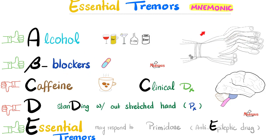Beta blockers inhibit the sympathetic nervous system, so you become less nervous, which means fewer tremors. Caffeine, on the other hand, is anti-adenosine. Adenosine wants you to calm down and be lazy and tired, but caffeine inhibits the adenosine receptor, makes you wake up — and your tremor as well, which makes perfect sense.